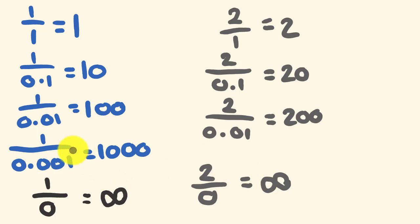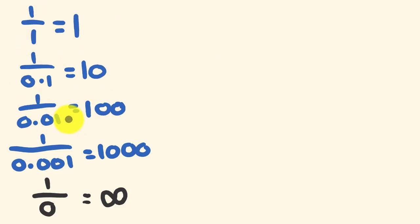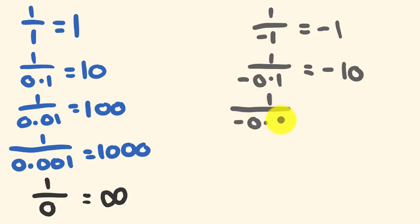But I'll show you the other problem that we have with this. When we're doing this particular thing, we're approaching zero from the positive side. But say we were to do the opposite and we were to approach zero from the negative side. So we could go 1 divided by negative 1 and we get this answer of negative 1. And then I could go the next one and I can make this smaller and approach zero from the negative side. And I could go 1 divided by negative 0.1, and I'm going to get this answer of negative 10. And the next one I could go is 1 divided by negative 0.01, and this is equal to negative 100.